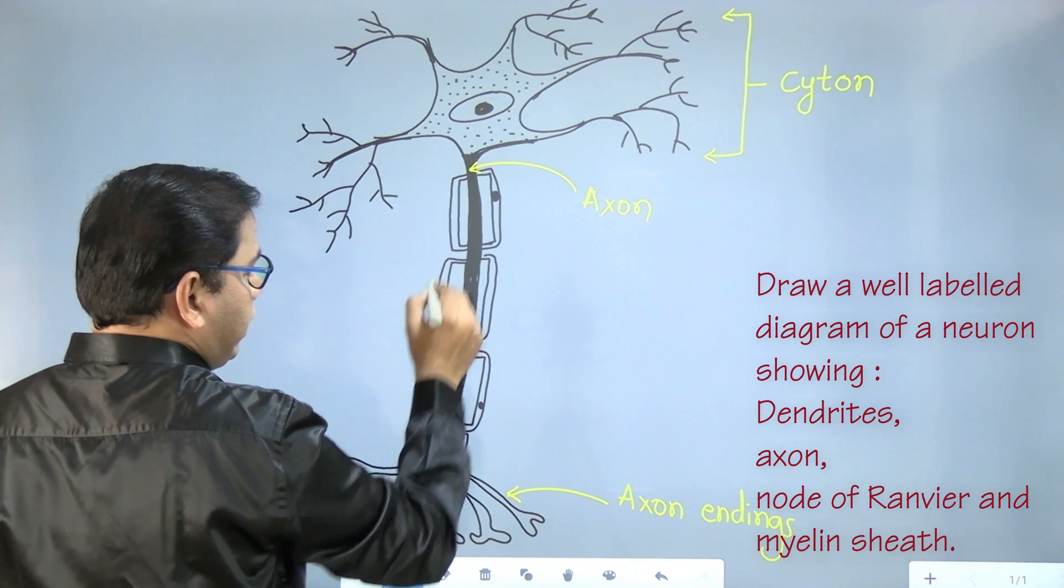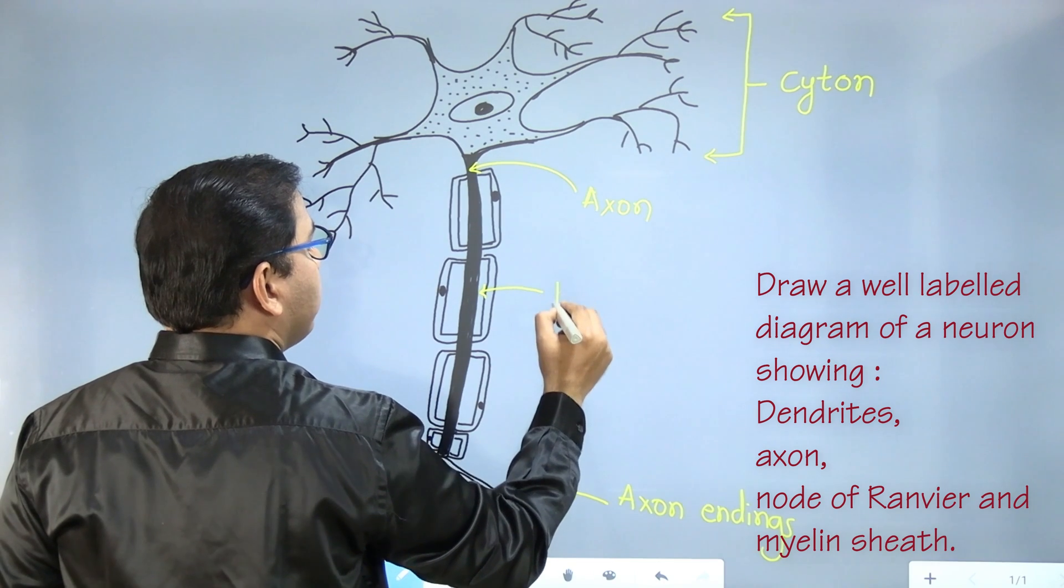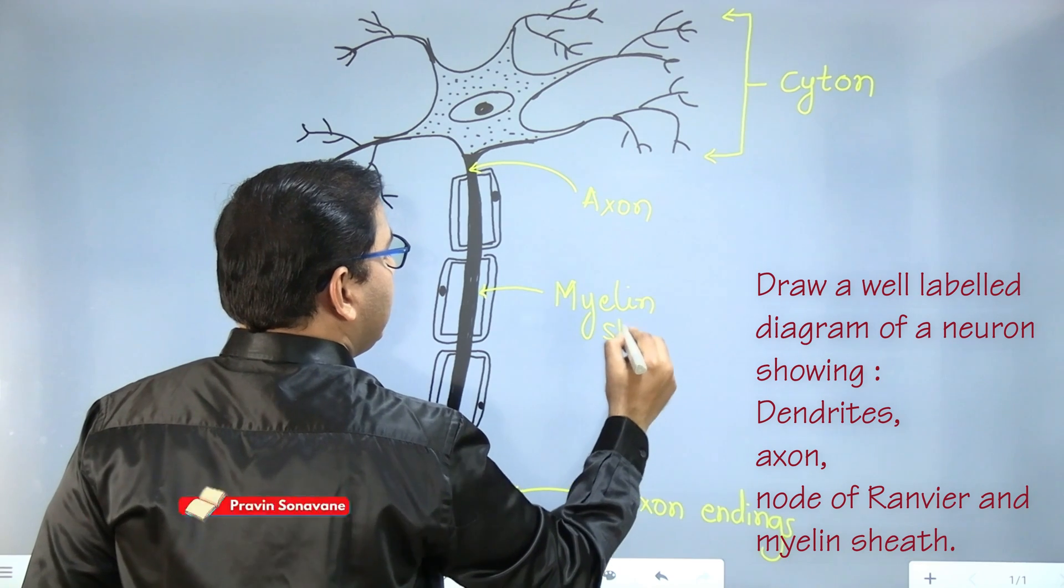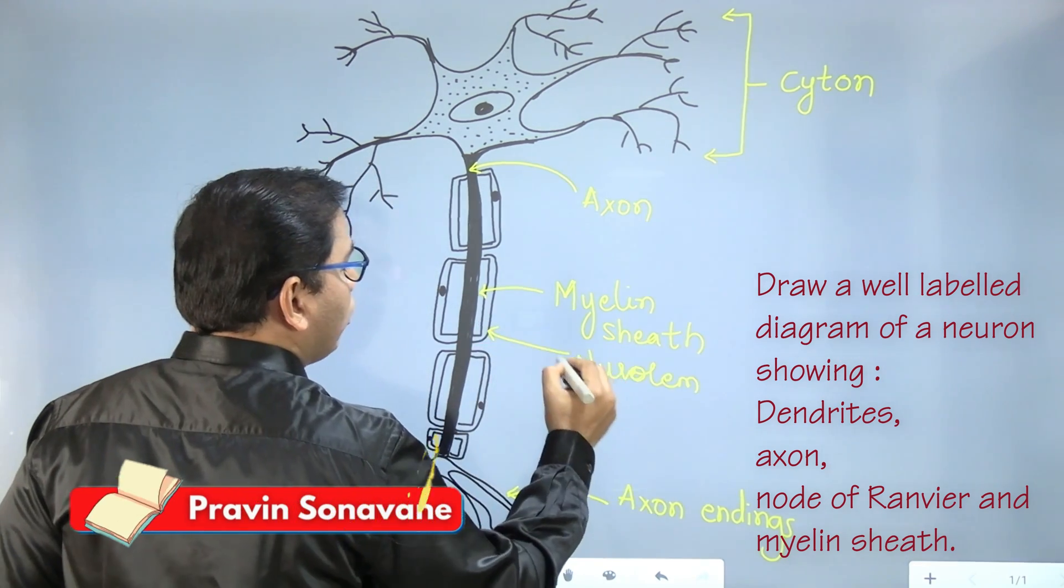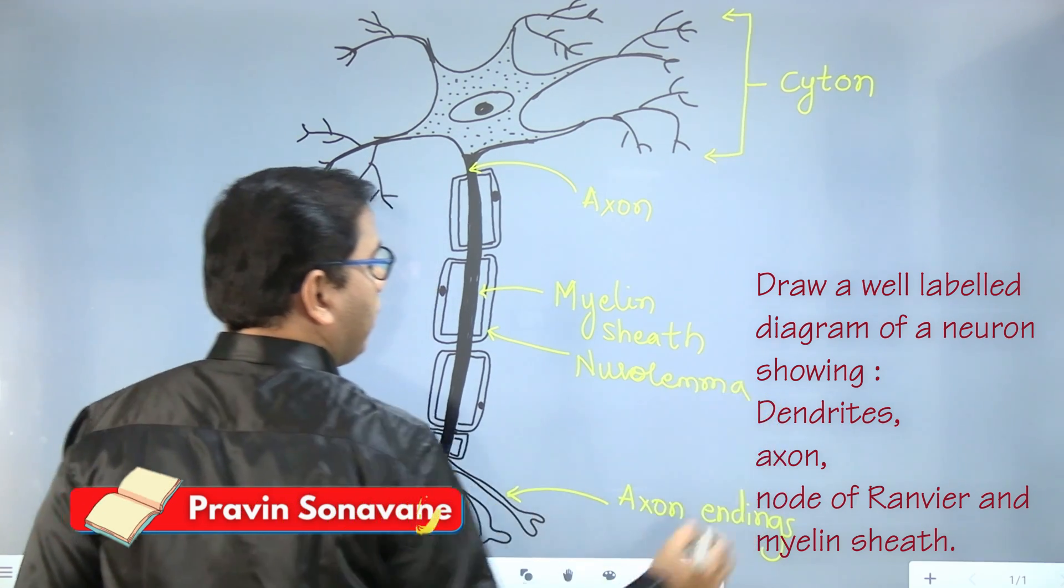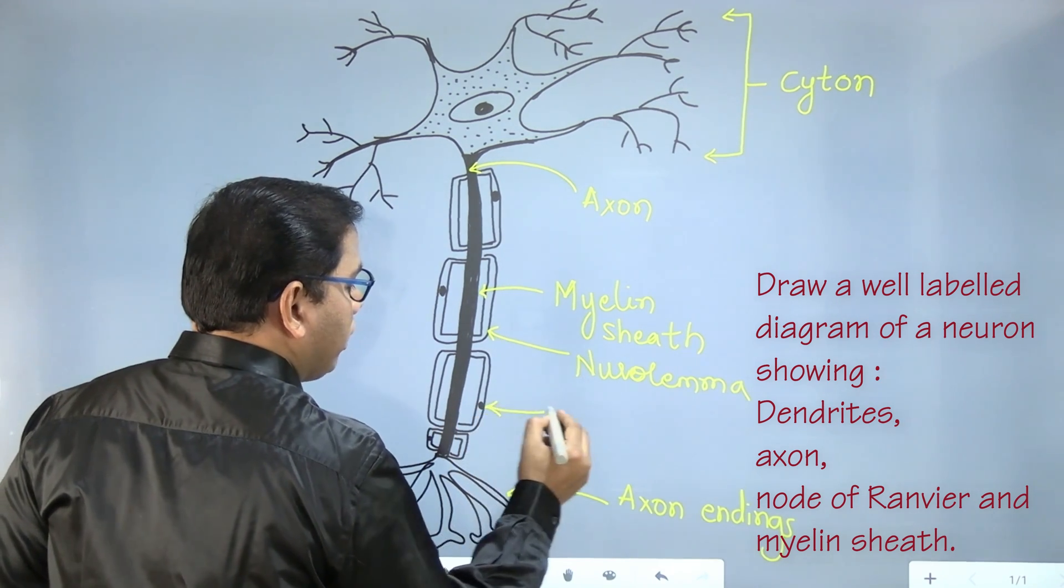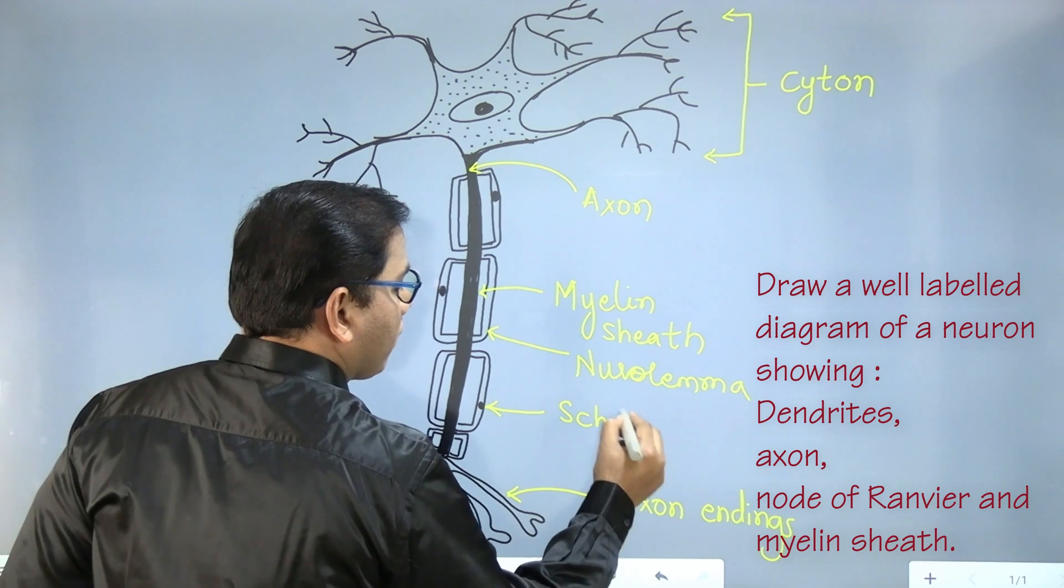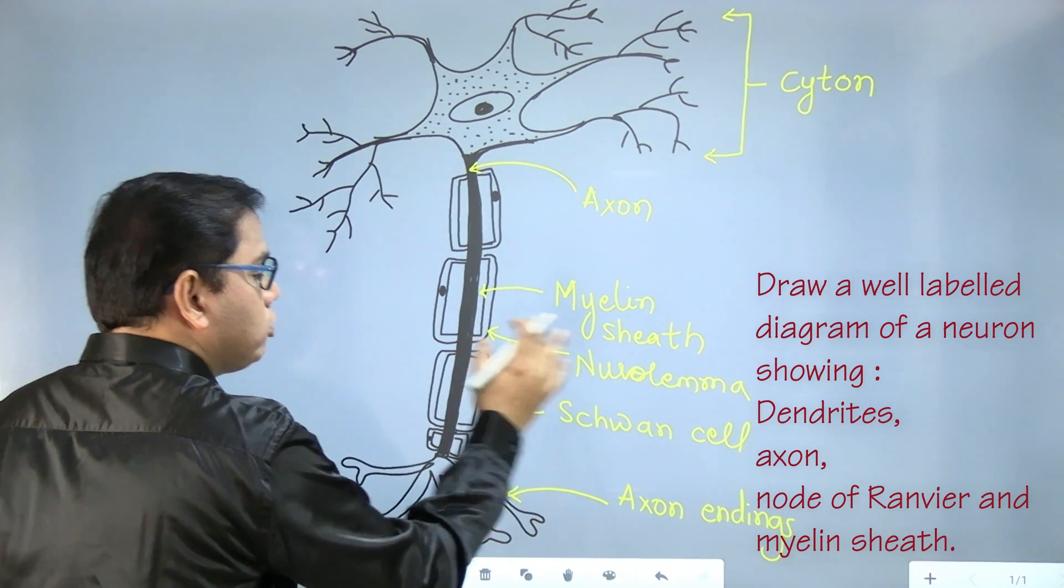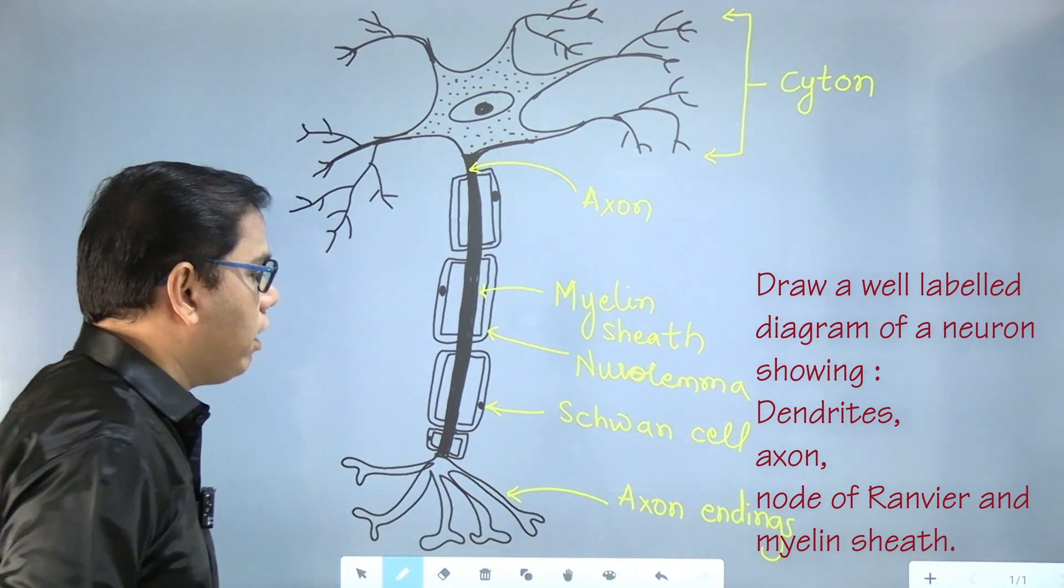Now if you see this box-like structure, it is called myelin sheath. And the outer end of the myelin sheath is called neurolema. And this cell which you see over here is called Schwann cell.